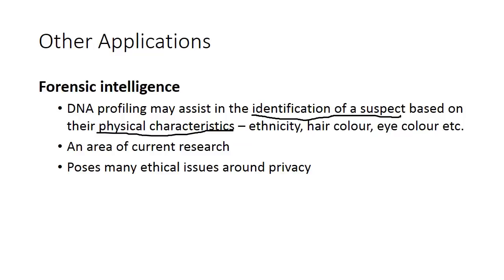Forensic intelligence can give police particular directions to follow in terms of who to target for investigation, and further evidence can build from there. It is an area of current research being looked into to more reliably determine someone's features. However, it poses many ethical issues, particularly around privacy, as people totally unrelated to an investigation may have their genome examined by police to find connections or relatives, with many unintended consequences.